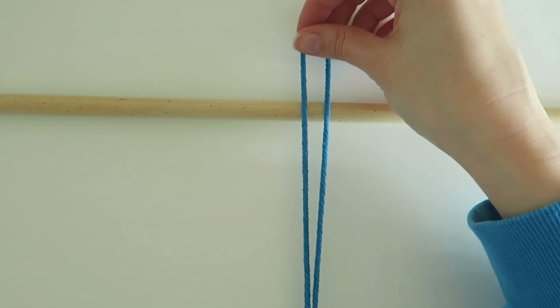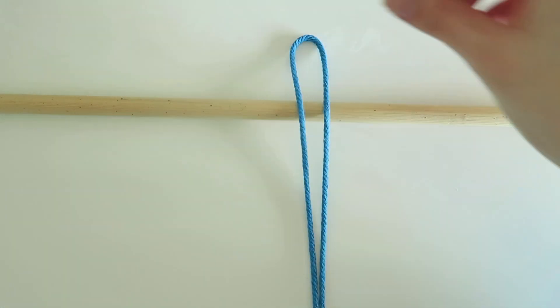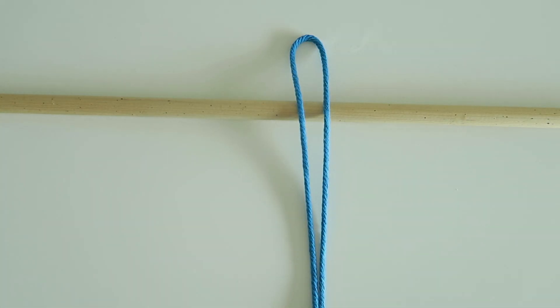We're going to drape the string which we folded in half over the top of the wooden dowel like this, so the halfway point is folded over the top.